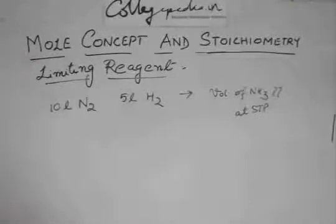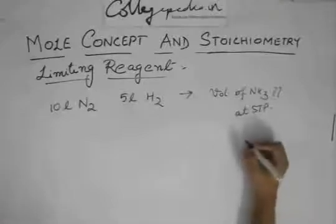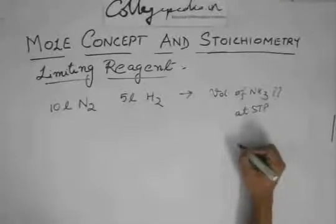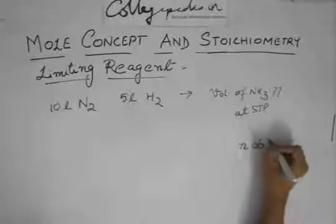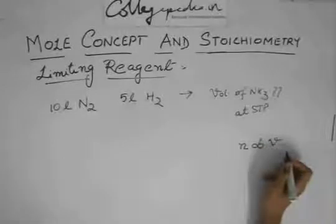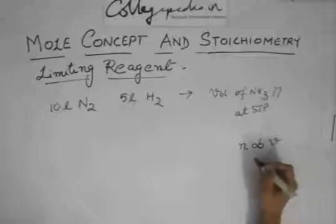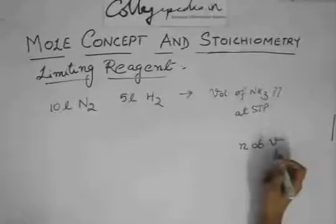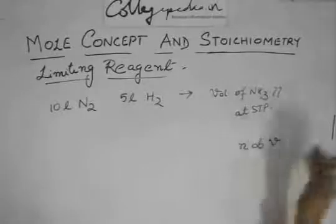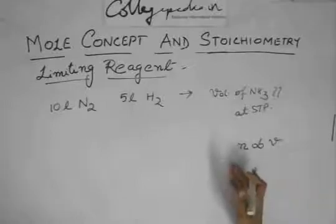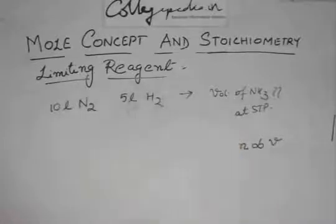Here, 10 liter reacts with 5 liter. Now we know that since all three are gases, the number of moles will be proportional to the volume because one mole has 22.4 liters volume. So might as well do the calculations in volume rather than doing in moles because the volume is directly given.